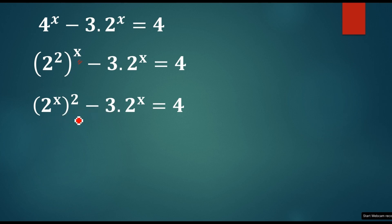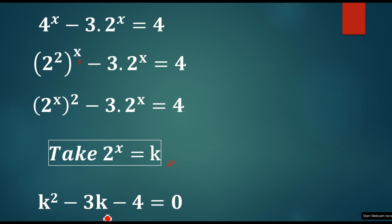Now, let's take 2^x as some another variable. Let's take k. Now, what will happen? 2^x will become like k. It will become like k^2 minus 3 into k minus 4 equal to 0.